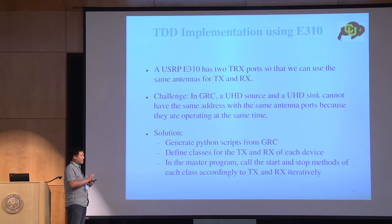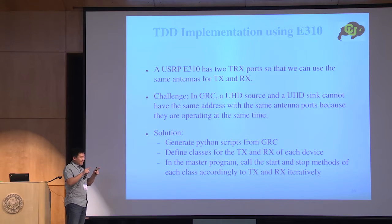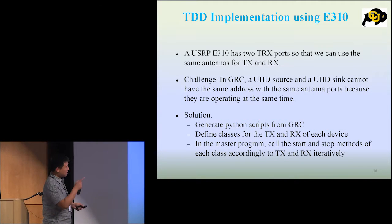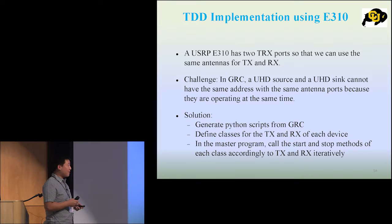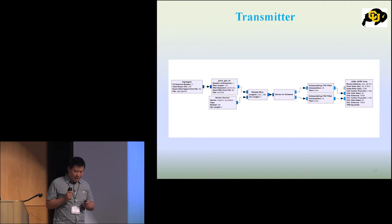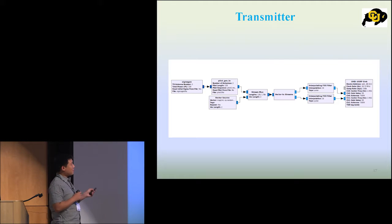To solve this, we work in Python. We generate the Python script from GNU Radio Companion by clicking the execute button. From that Python code, we extract the classes of the transmitter and the receiver. In the main program, we just call start and stop accordingly to make the transmission iterative.